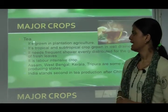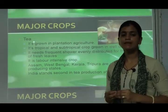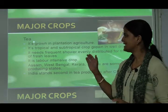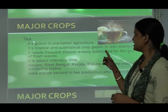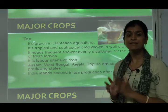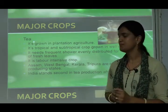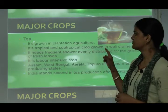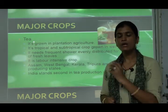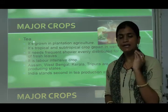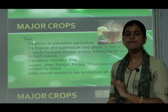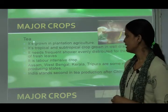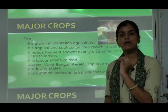Tea is grown in plantation agriculture, which means growing a single crop. It is a tropical and subtropical crop grown in well-drained soil. It requires frequent and evenly distributed showers for the growth of fresh leaves, and is a labor-intensive crop requiring a lot of labor.